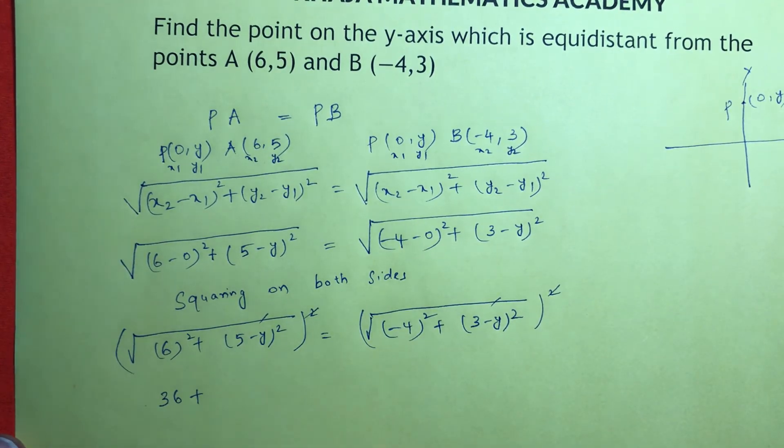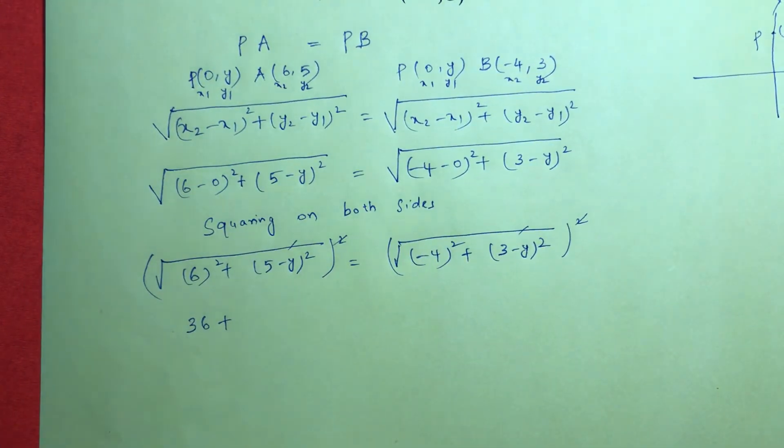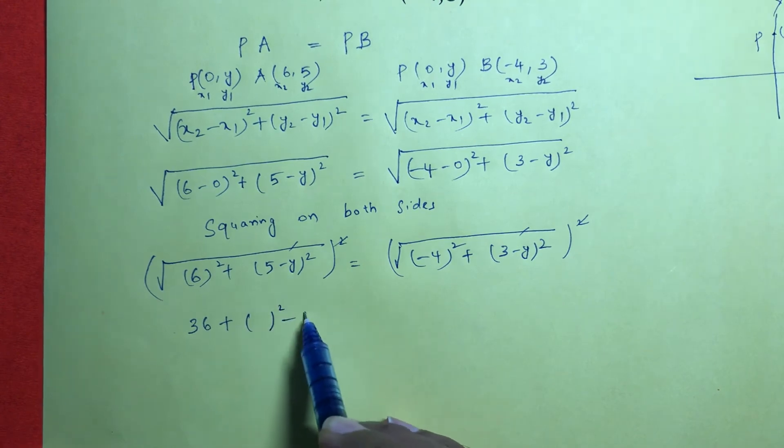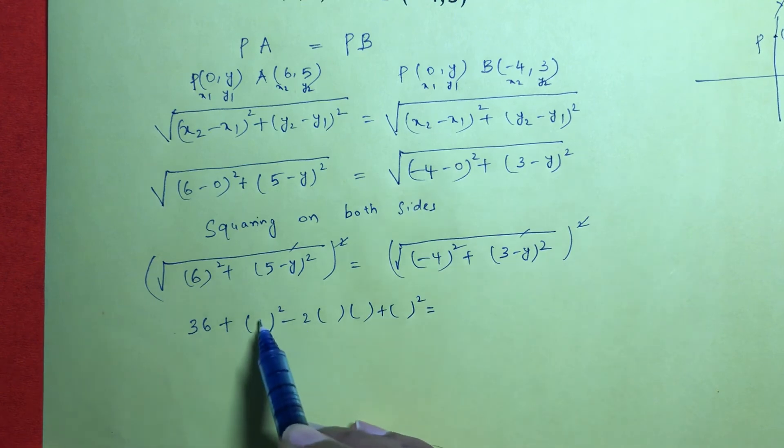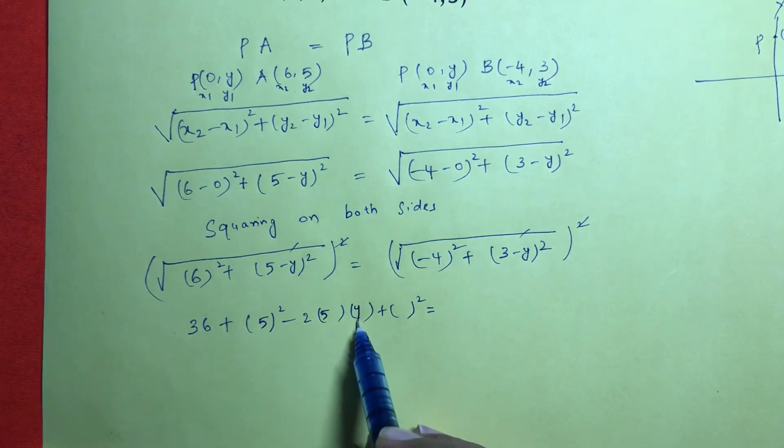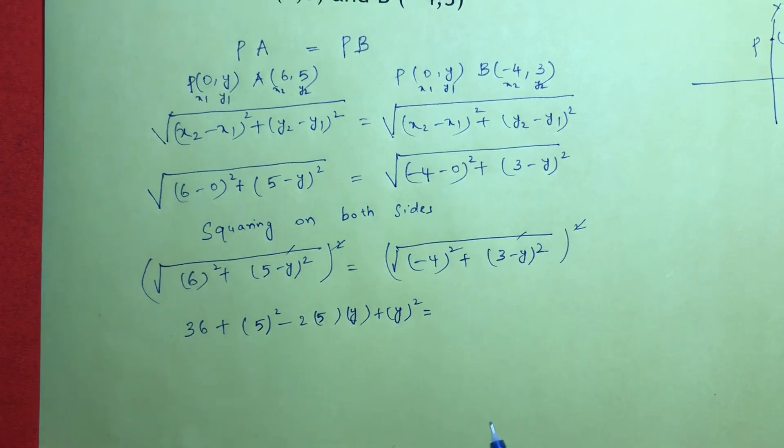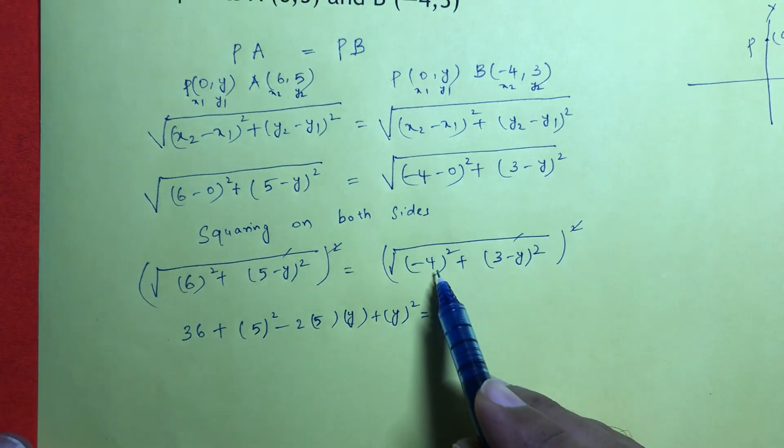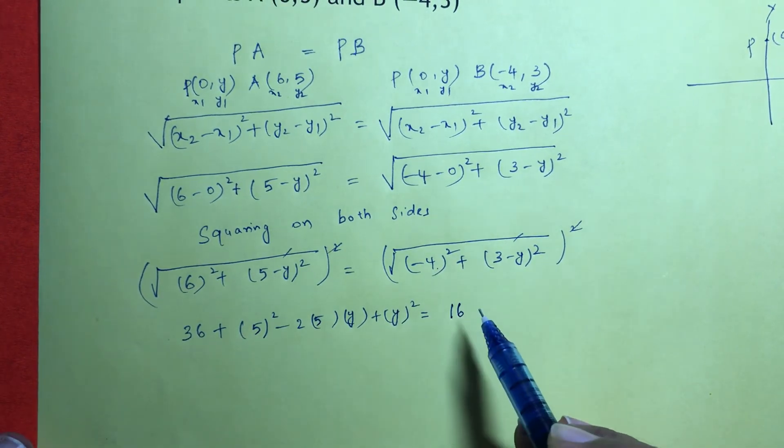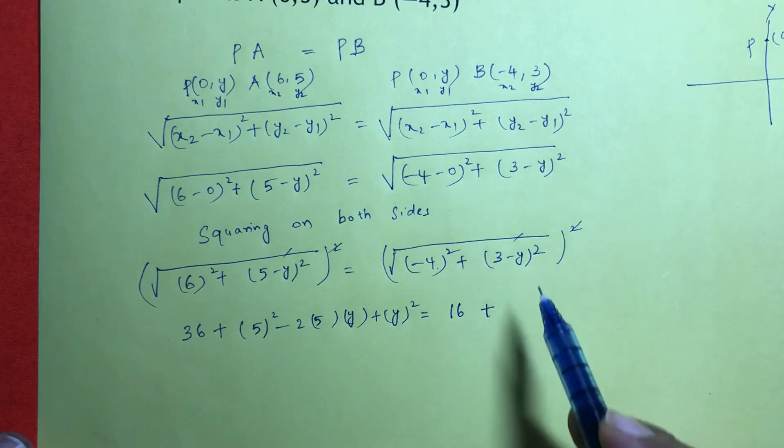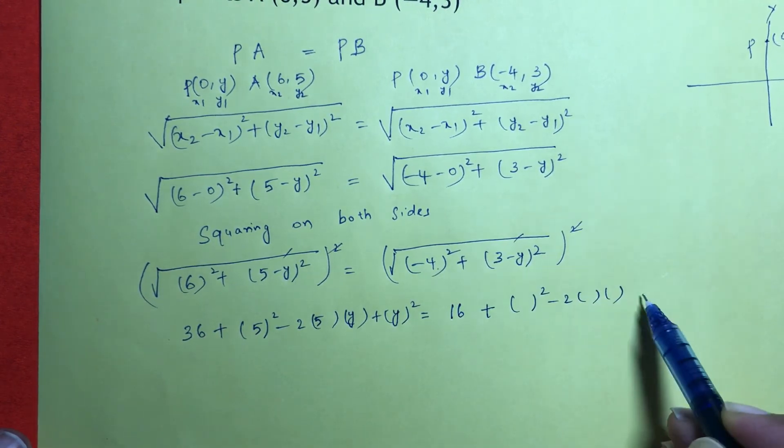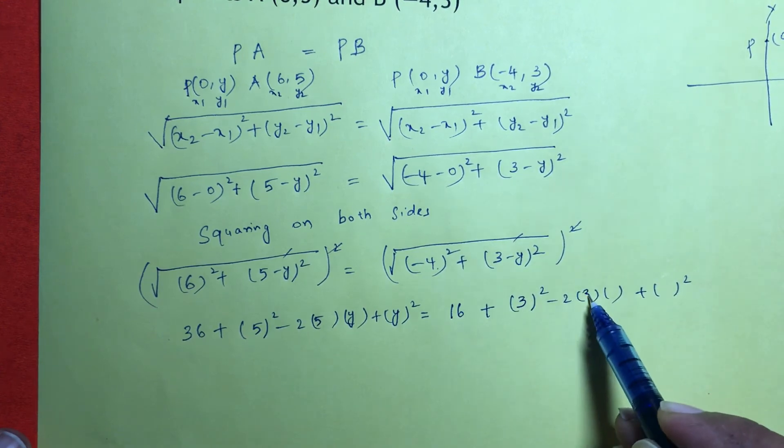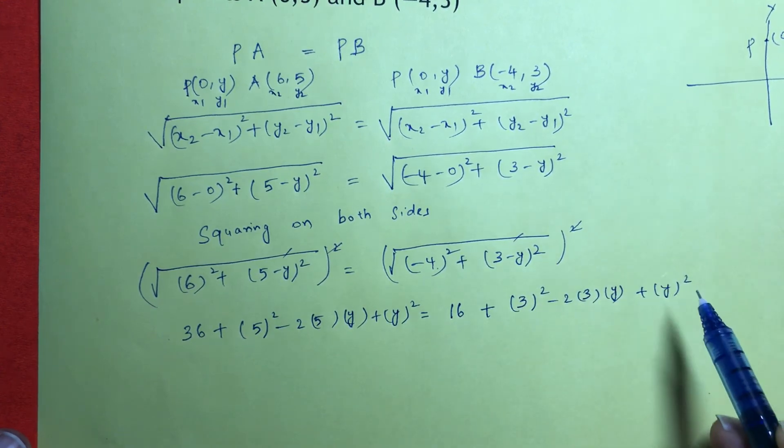It is in the form of (a - b)². So (a - b)² is a² - 2ab + b².